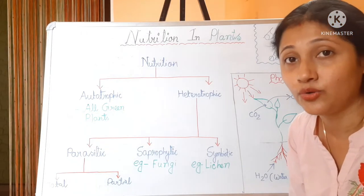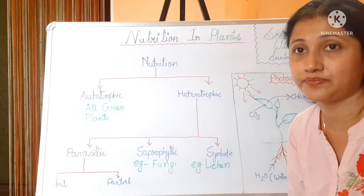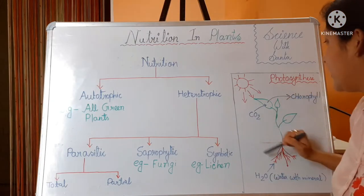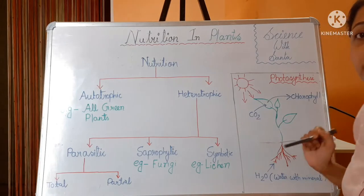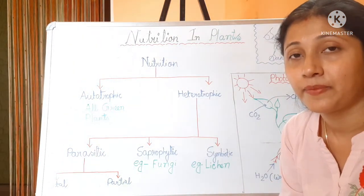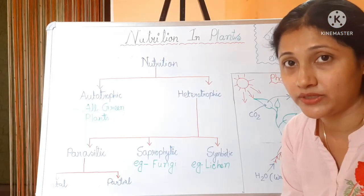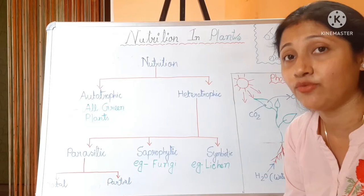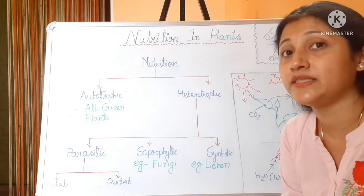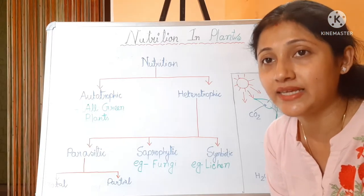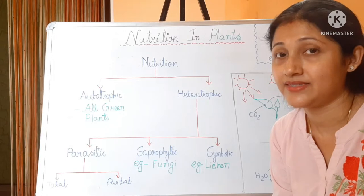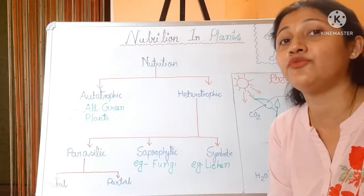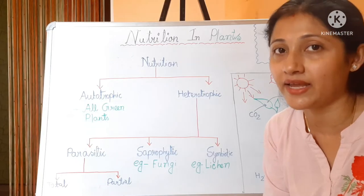The food produced is glucose. The process in which green plants make their own food in the leaves with the help of sunlight, carbon dioxide, and water — this process is called photosynthesis. Photo means light, and synthesis means to make. That's why the name is photosynthesis — they make their food with the help of sunlight.